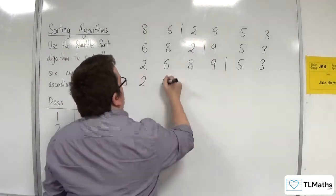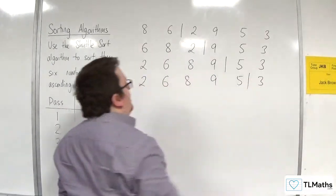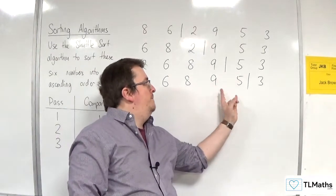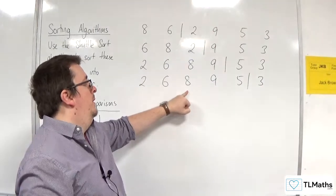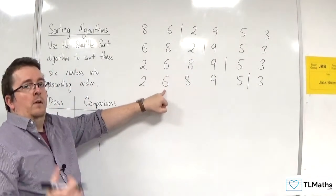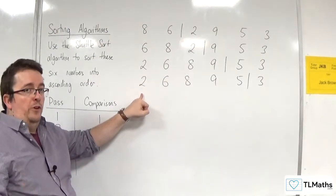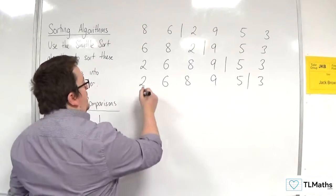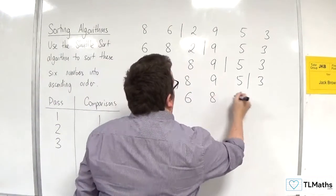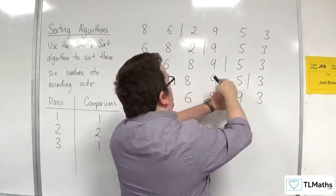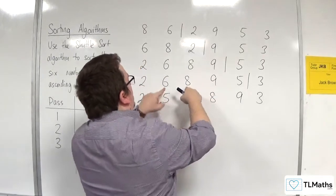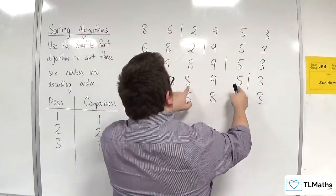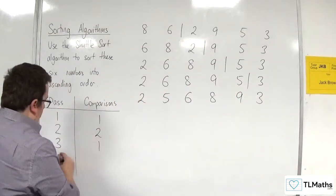We've now got this list, so we're going to bring five in next. Five's going to need to get compared with nine, but that's going to cause a swap. Then five would have to be compared with eight. They would need to swap. Then five would need to be compared with six. They swap. Then five needs to get compared with two. Once five is compared with two, we realize there's no swap required at that point. So we would have two, five, six, eight, nine, three. Five got compared with nine, it swapped. Five got compared with eight, it swapped. Five got compared with six, it swapped. Five got compared with two, it's in the correct position. So we made one, two, three, four comparisons on the fourth pass.